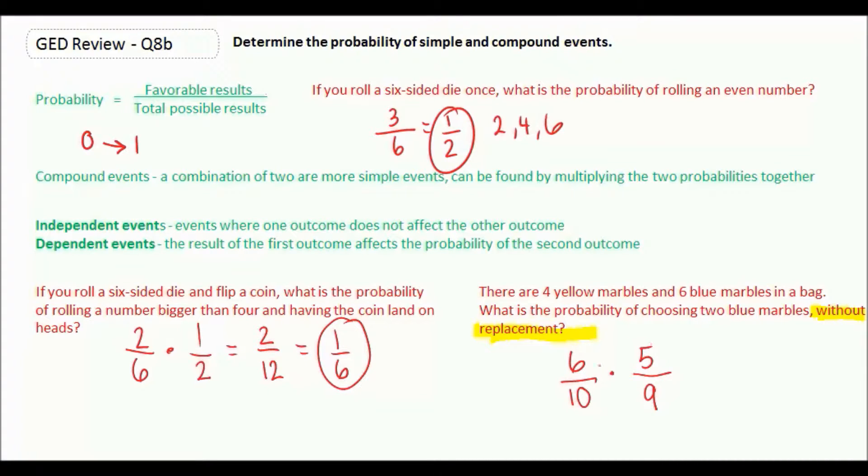So let's cross-reduce in this case. We'll simplify before we multiply. Five goes into five once, five goes into ten twice. Three goes into six twice, and three goes into nine three times. And actually, I can simplify here more. They reduce. So really, it's just one times one is one, and one times three is three. And that is our dependent probability.